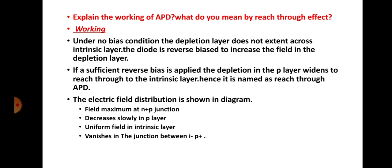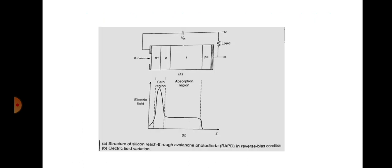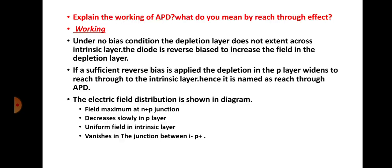Under no-bias condition, the depletion layer does not extend across the intrinsic layer. Without any applied bias, the depletion layer forms only between the n and p regions and does not extend into the intrinsic region, since all surrounding materials are p-type. In order to increase the electric field within the depletion region, a reverse bias is applied. When sufficient reverse bias is applied, the depletion layer in the p layer widens.